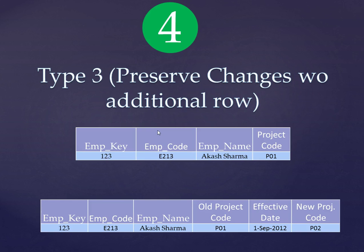In theory you can preserve changes up to Type 6 or SCD 6. To know more you can read Ralph Kimball's book 'The Data Warehousing Toolkit,' where all six types are explained with good scenarios. Now let's talk about implementing this in QlikView.